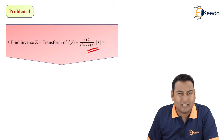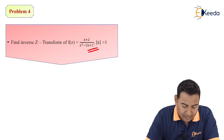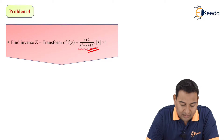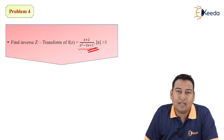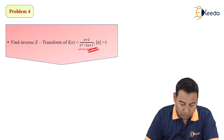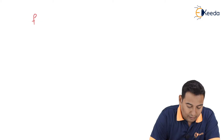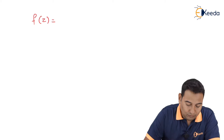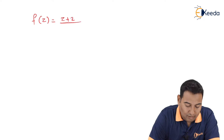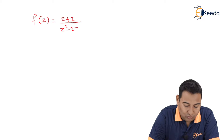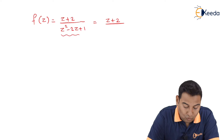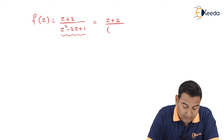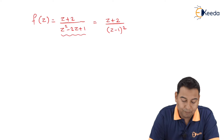The problem is straightforward. In the denominator we have a quadratic equation, and whenever we get a quadratic equation in the denominator we need to find its roots. So: f(z) = (z + 2) / (z² - 2z + 1), which equals (z + 2) / (z - 1)².